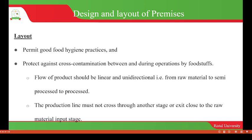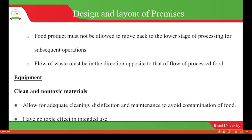The production line must not cross through another stage or exist close to the raw material input stage. This helps in the prevention of the transfer of pathogens from raw materials to processed food. Food products must not be allowed to move back to a lower stage of processing for subsequent operations.